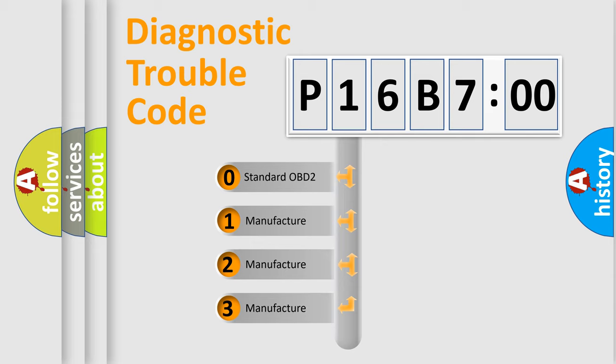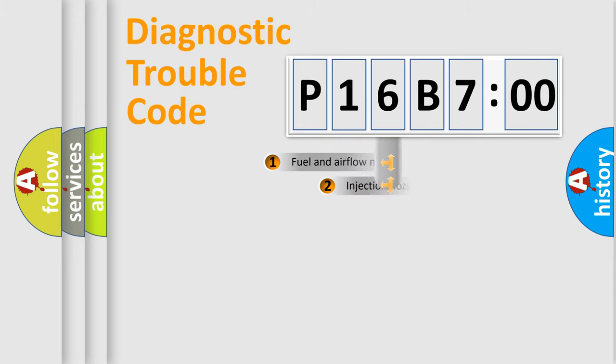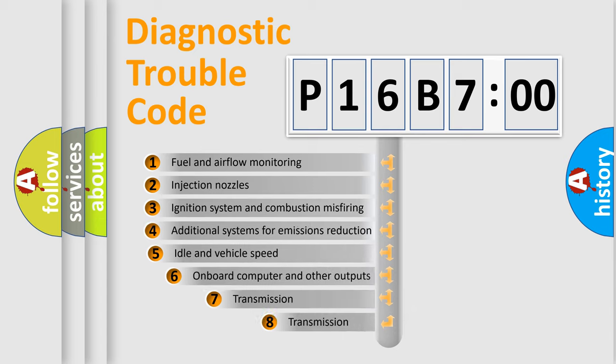If the second character is expressed as zero, it is a standardized error. In the case of numbers 1, 2, or 3, it is a manufacturer-specific expression of the car-specific error.